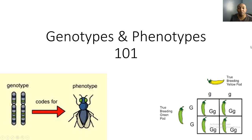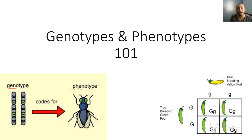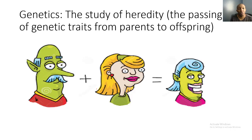Good morning everyone, we're back once again with another amazing science tutorial video. In this video we're going to be talking about the relationship between genotypes and phenotypes. As you can see in the picture, the genotype codes for the phenotype, meaning your genotypes code for your physical makeup or traits. We'll be basing this off of genetics, which is the study of heredity — the passing of genetic traits from parents to offspring.